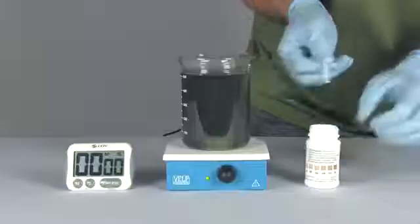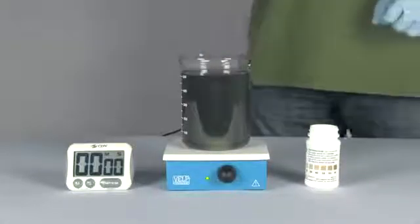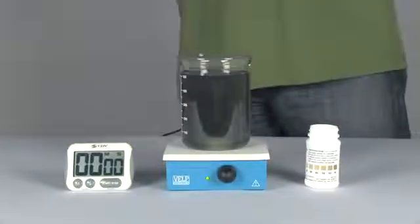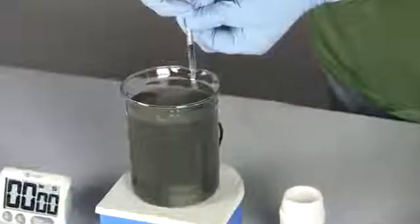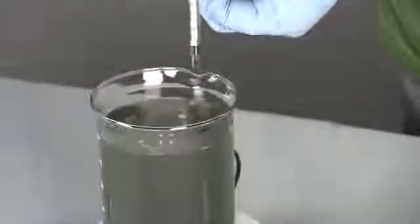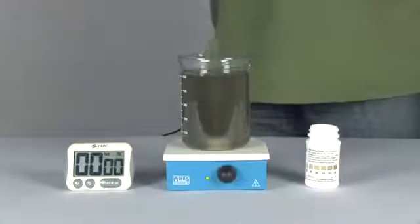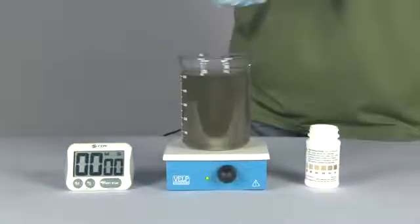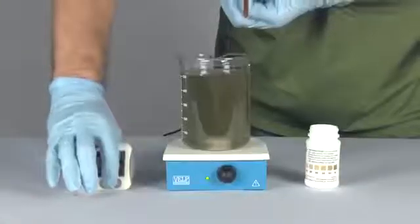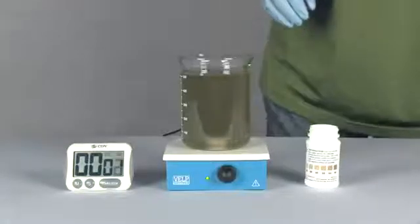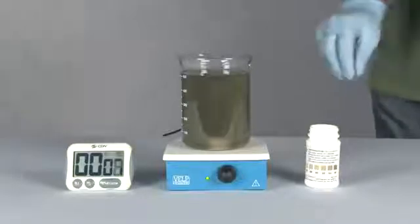0.3 milliliters of hydrogen peroxide and 0.1 milliliters of Ultra S3 are added to the solution. The peroxide and S3 are allowed to oxidize the hydrogen sulfide for 30 seconds.